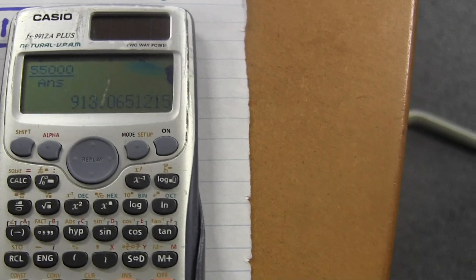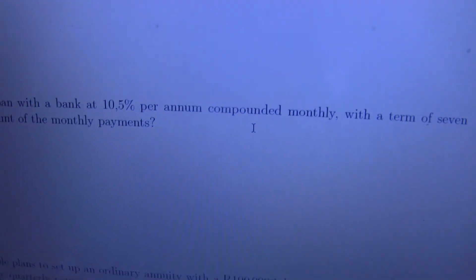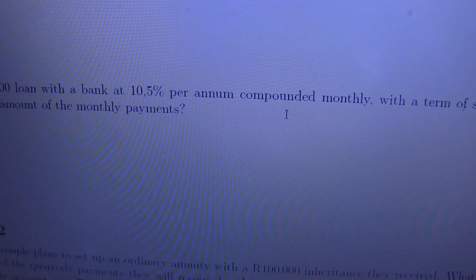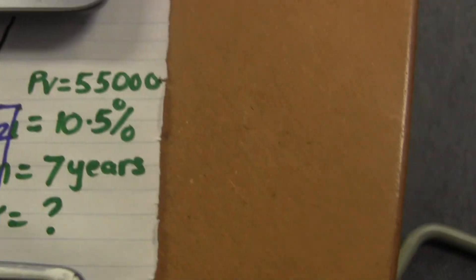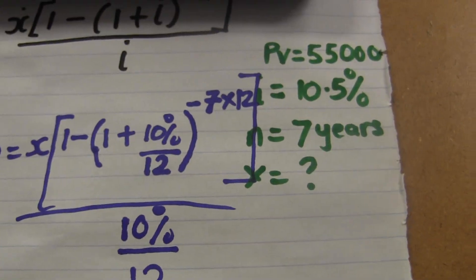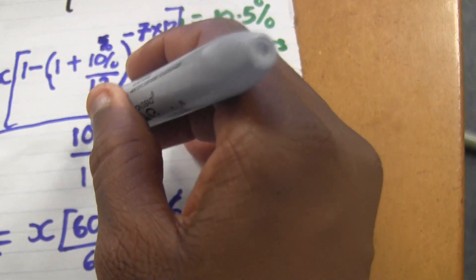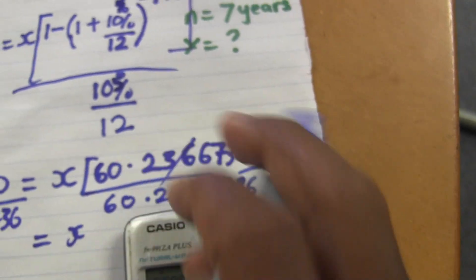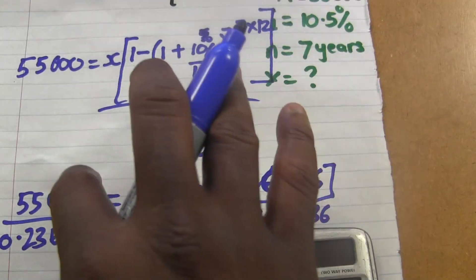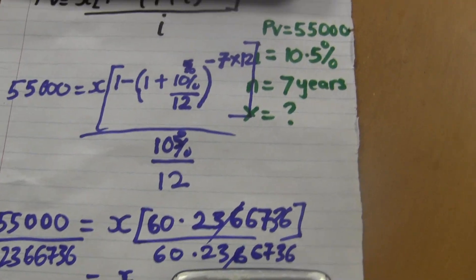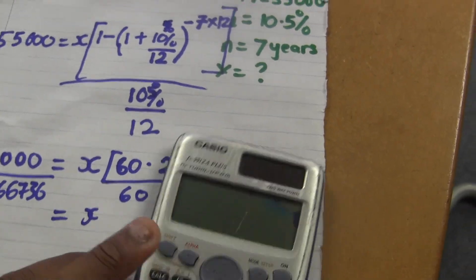That gives us around 913 — but wait, I made a mistake. The interest rate is actually 10.5%, not 10%. I need to correct that. Everywhere I wrote 10%, it must be 10.5%. So this substitution is wrong and I have to redo the calculation with 10.5%.